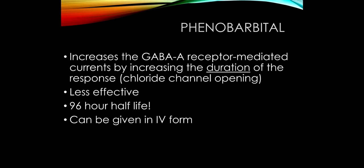Phenobarbital is an older anticonvulsant that we really don't use anymore with the exception of status epilepticus, where it can be given intravenously. Phenobarbital acts on the GABA receptor by increasing the duration of chloride channel opening. It's less effective than other seizure medications and has a whopping 96-hour half-life, so when starting this medication, it takes upwards of three weeks to reach steady state.